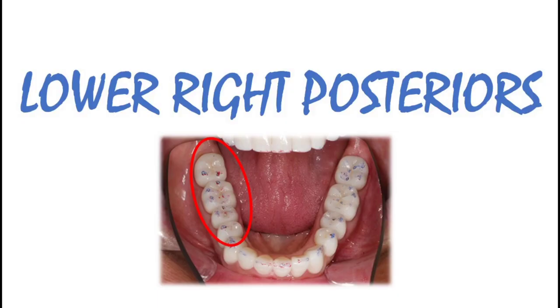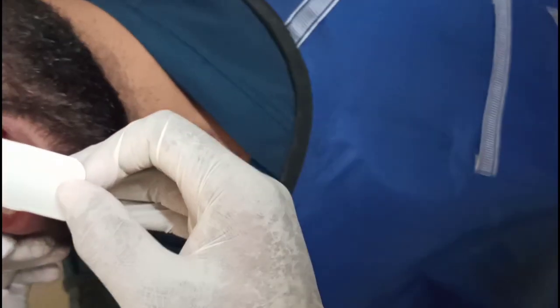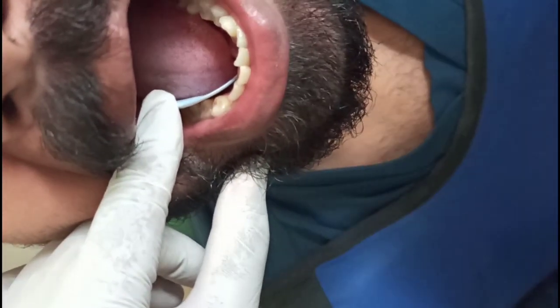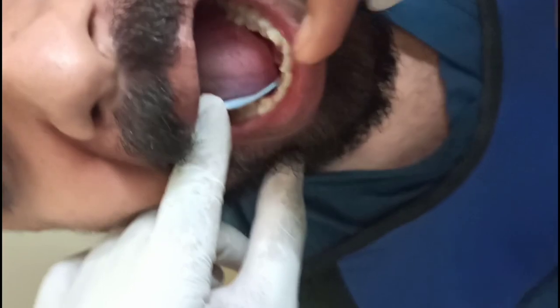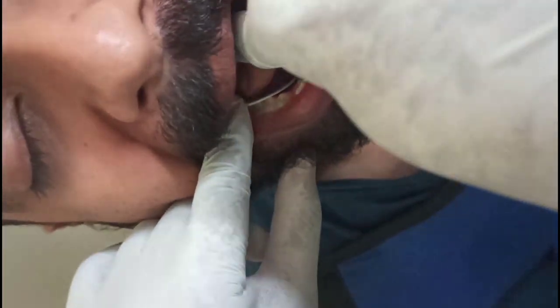For lower right posteriors: note I am standing in the seven o'clock position with both my right and left hands on the right side of the patient. I am placing the film inside with the right hand and holding it with my left hand index finger on top of the film until the patient takes over to hold the film.